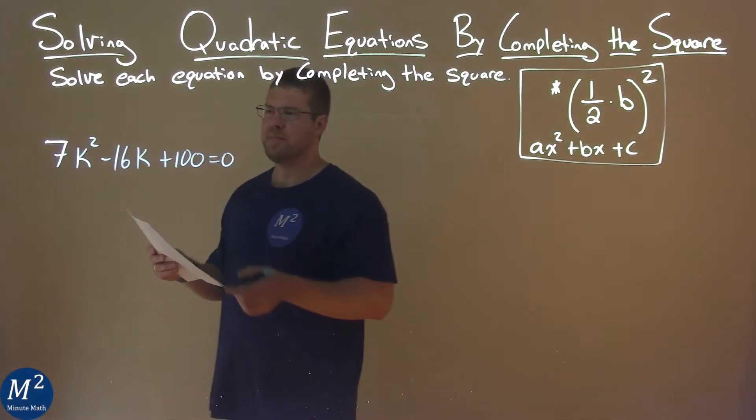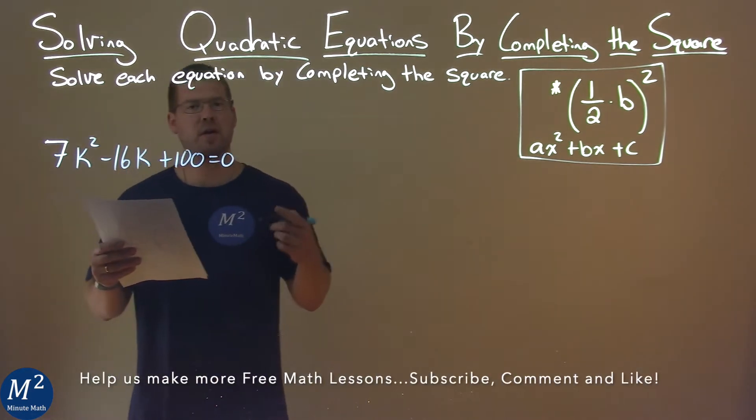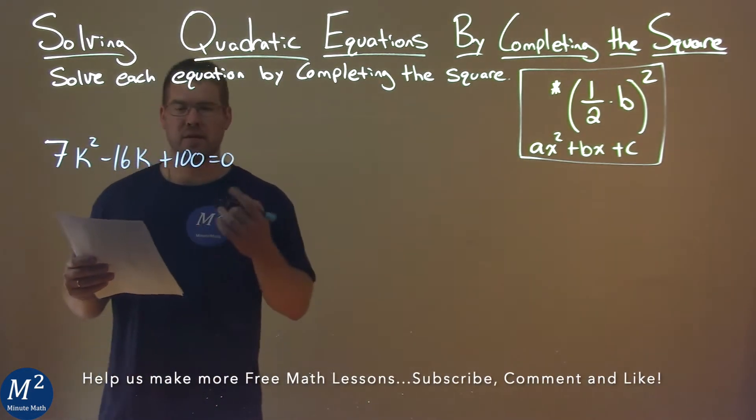We're given this problem right here: 7k squared minus 16k plus 100 equals 0, and we need to solve this by completing the square.